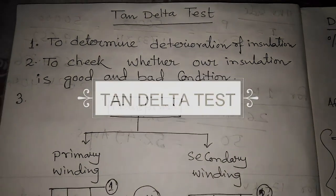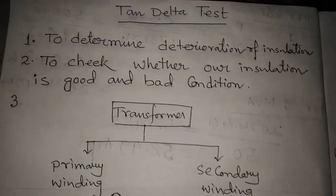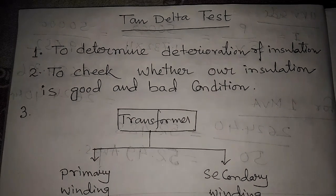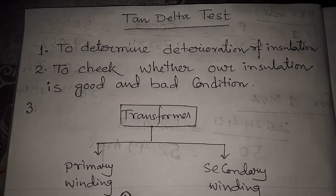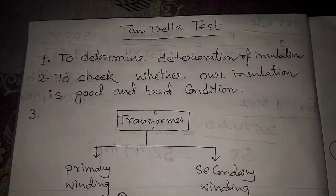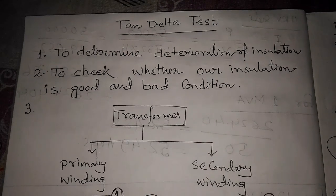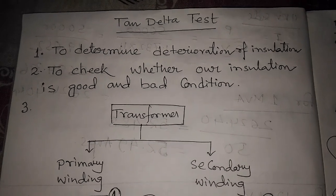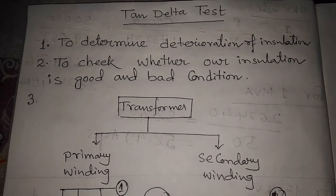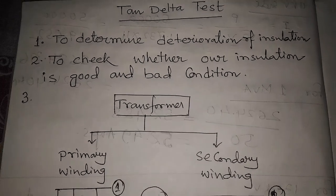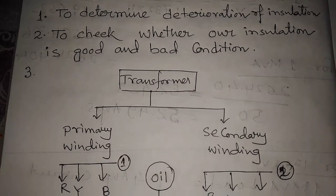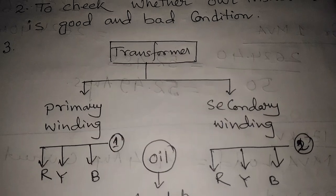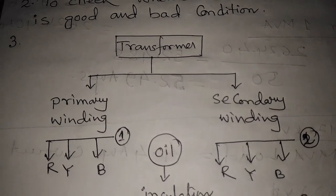Today we discussed about the Tan Delta test. The Tan Delta test is used to determine the deterioration of insulation — to check whether our insulation is good or bad. If we do the Tan Delta test on transformers, let us now start about the Tan Delta test of a transformer.